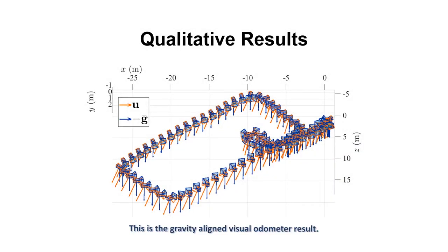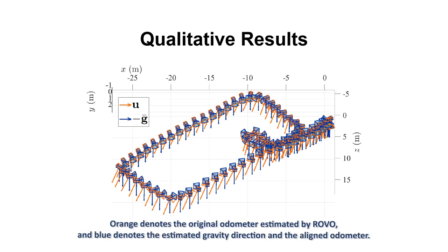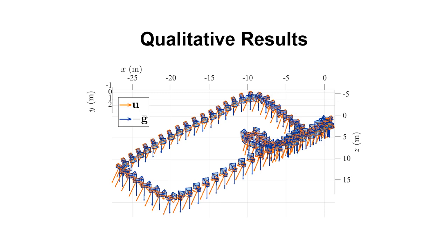This is the gravity aligned visual odometry result. Orange denotes the original odometry estimated by ROVO. And blue denotes the estimated gravity direction and the aligned odometry. The rig poses estimated by ROVO are well aligned according to the gravity direction.